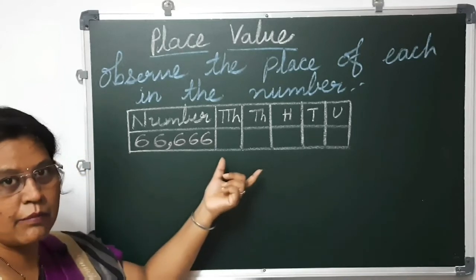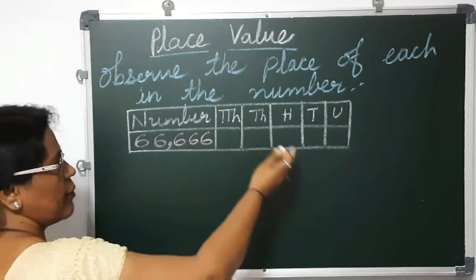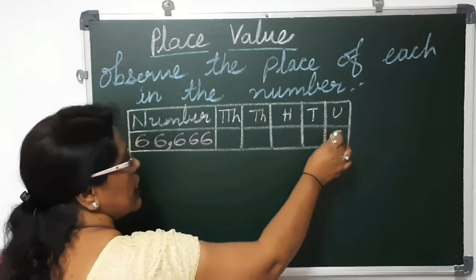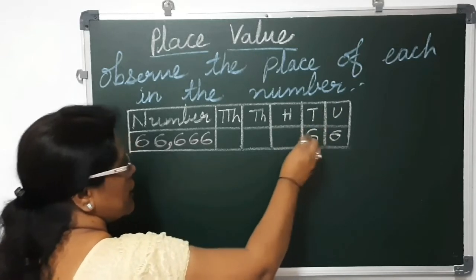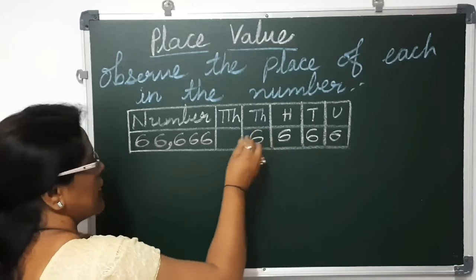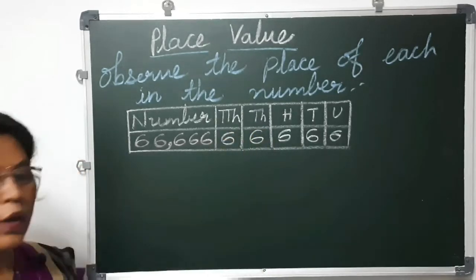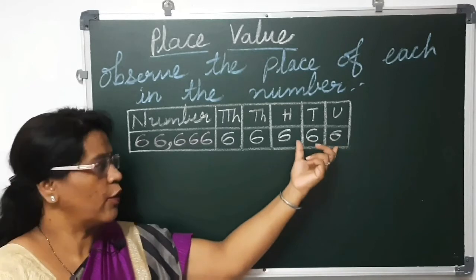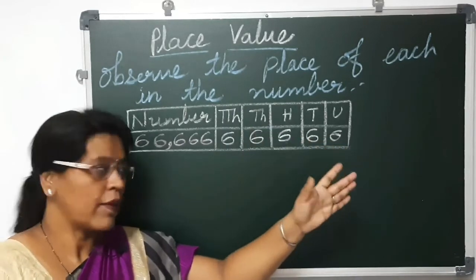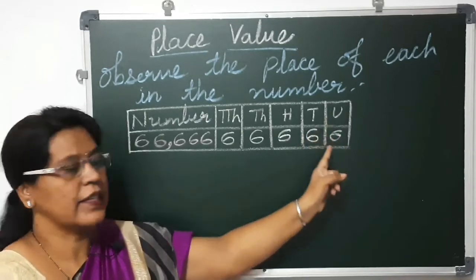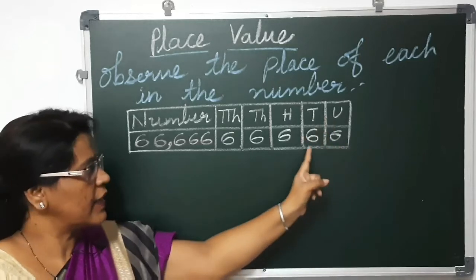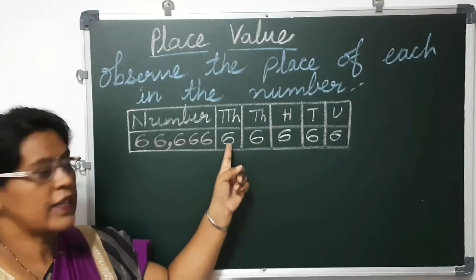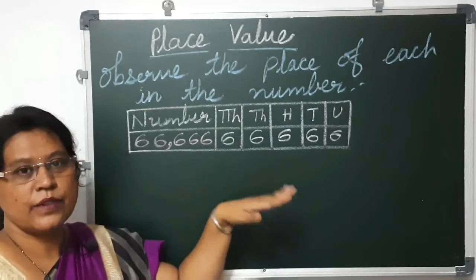First we will start putting the digits in the place values, starting from units. So 6 is in units place, 6 is in tens place, 6 is in hundreds place, 6 is in thousands place, and 6 is in ten thousands place. One thing you have to observe here — each digit is the same, but the difference is the place values. This 6 is in units, this 6 is in tens, this 6 is in hundreds, this 6 is in thousands, and this 6 is in ten thousands place.